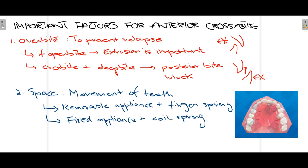The second factor to consider when planning treatment for anterior crossbite is the presence of space. If space is present, teeth can be positioned buccally or lingually to achieve normal occlusion. If there is no proper space, repositioning the teeth will be difficult. If adequate space is present, we can use a removable appliance with a finger spring, as seen in this picture. We can also use a fixed appliance with a coil spring, provided some space is available.